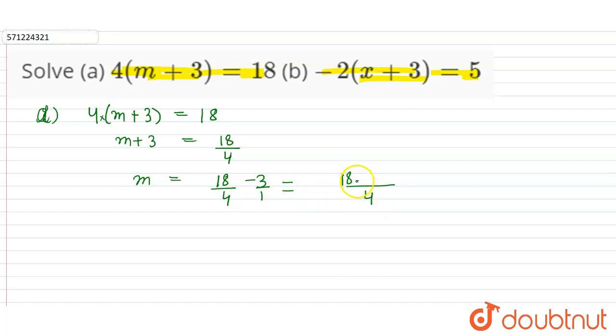Now 1 into 4 is 4. So 4 into 3 is 12. And 18 minus 12 is 6, 6 by 4. The value of m is 6 by 4 or we can say 3 by 2. And 3 by 2 is equal to, divide 3 by 2.